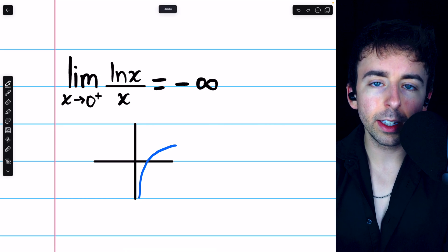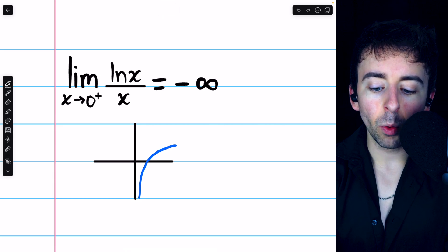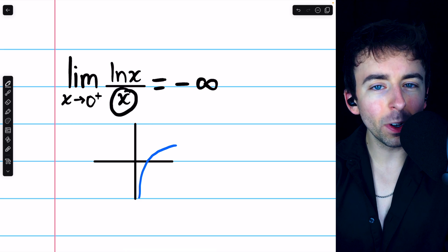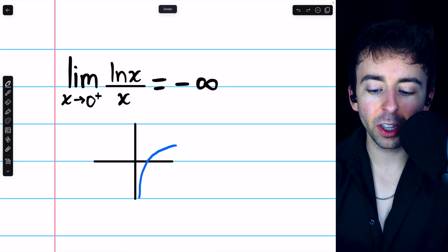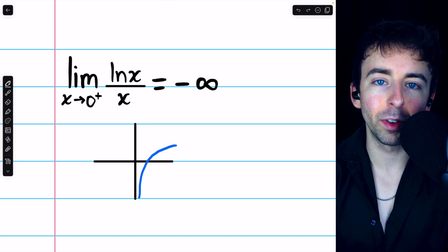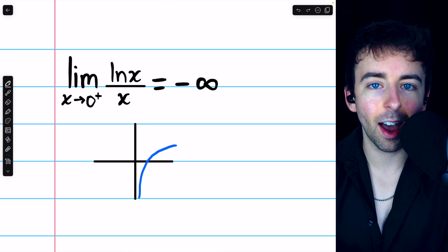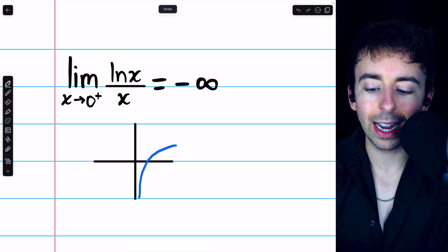That's because the natural log is going to negative infinity, while x is taking on increasingly small positive values. Dividing by a small positive value is just going to make a number even bigger without changing the sign. So the limit diverges to negative infinity.